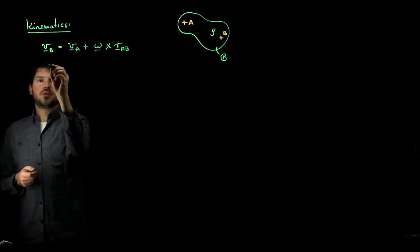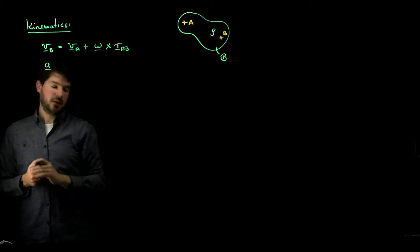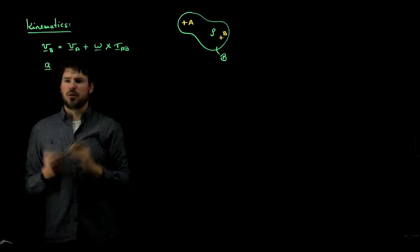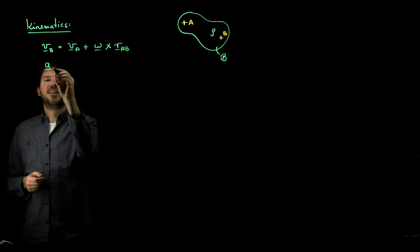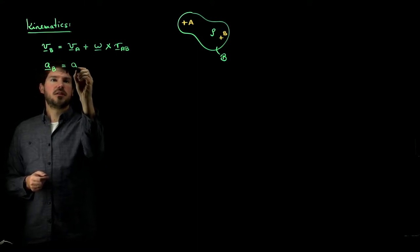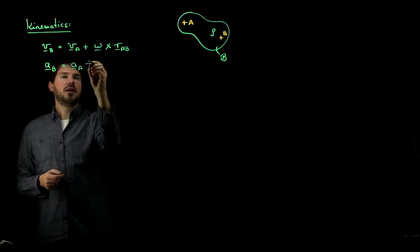And then we had a second relation, which was the acceleration transfer formula, which told us that the acceleration of point B is the same as the acceleration of point A plus, now we took a time derivative, omega dot cross RAB plus,